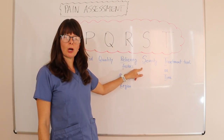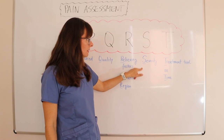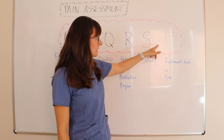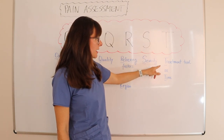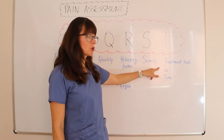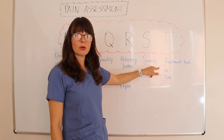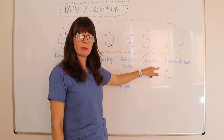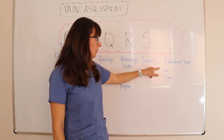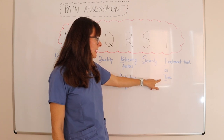S stands for severity — that's our 0 to 10 scale. T can stand for treatment tried, meaning what has the patient tried at home or with non-pharmaceutical measures to make the pain better, or T can stand for time.